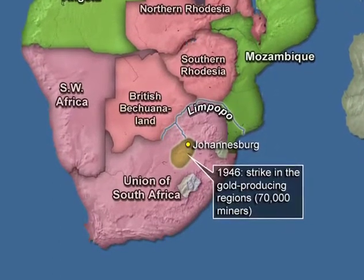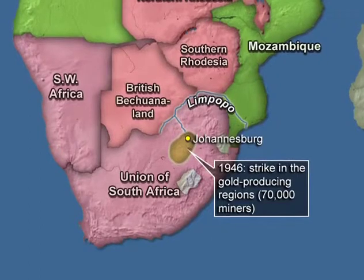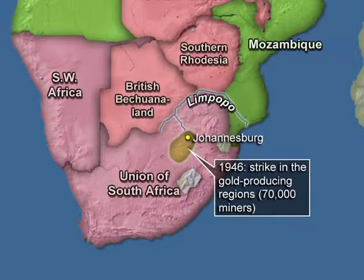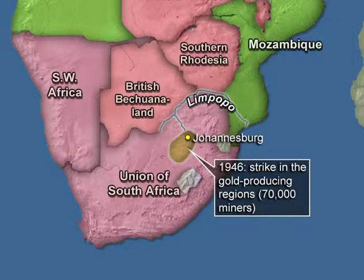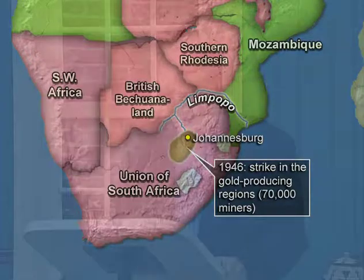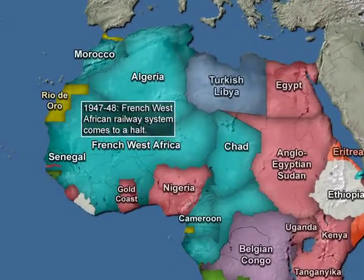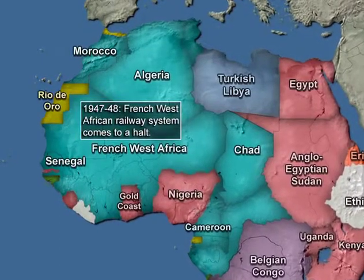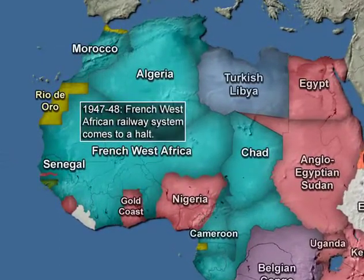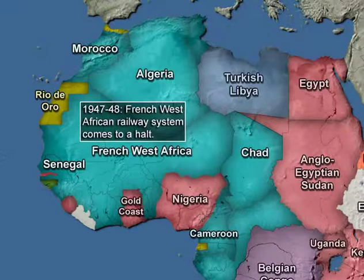In South Africa — in many respects a special case but very much part of this trend of explosive urban unrest in the decade of the 1940s — in 1946, 70,000 African miners came out on strike in the gold mines: the commodity which built modern South Africa. And most dramatic of all, the entire French West African railway system in 1947 and 1948 came to a halt as part of one of these urban-based work stoppages. Never a period like that before, and frankly, never a period like that since.